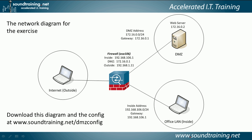Here's the diagram we're going to be using for this exercise. We have three separate networks: the internet or outside, the DMZ, and the office LAN or inside. The IP addresses are just private addresses in our LAN, so this wouldn't actually work on the internet without modification. Our outside interface has an IP address of 192.168.1.11, the inside is on the 192.168.106 subnet, and the DMZ is on the 172.16.0 subnet. The diagram and configuration are available for free at www.soundtraining.net/dmzconfig.